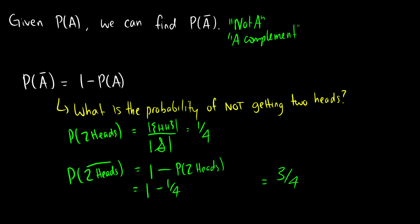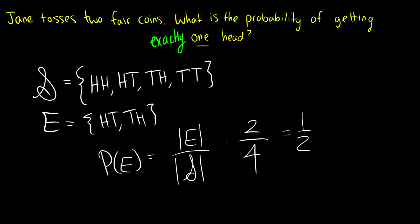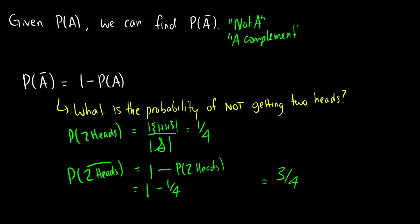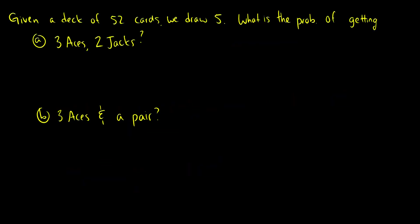We can verify this with the sample space. The probability of not getting two heads — that's the head-tails, tails-heads, and tails-tails situations — which is three out of four. So it works with our intuition, and by using a simple example we can verify this. We can find complements.